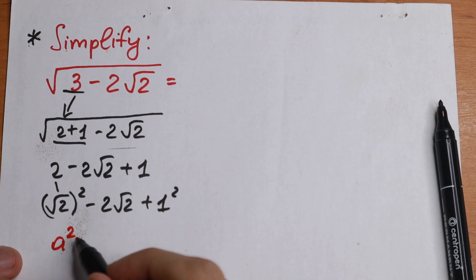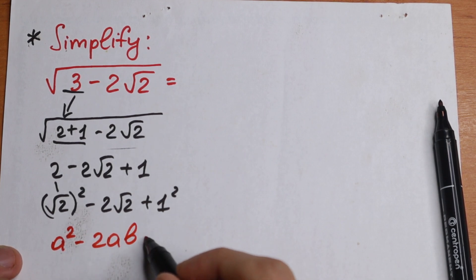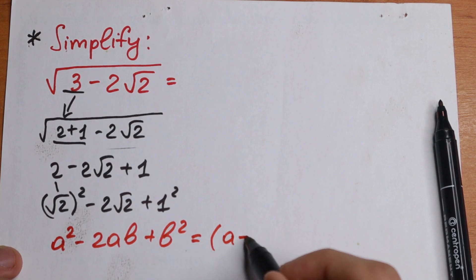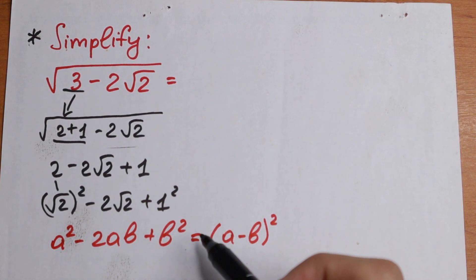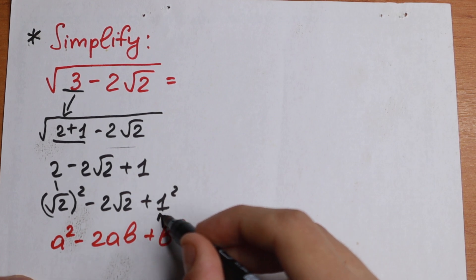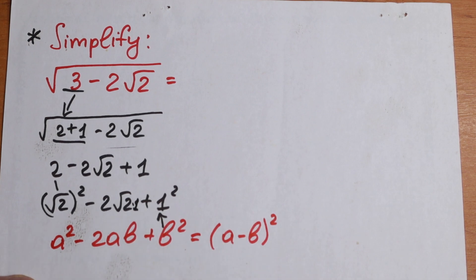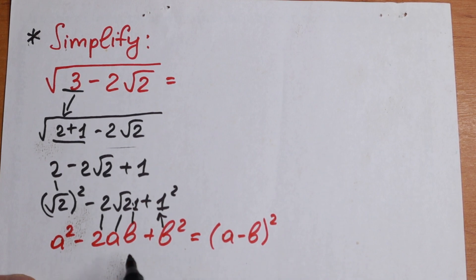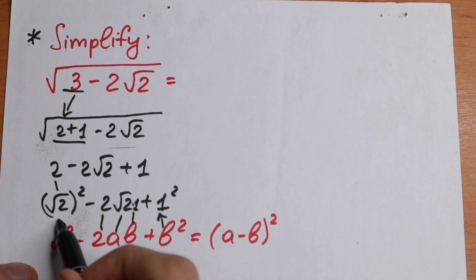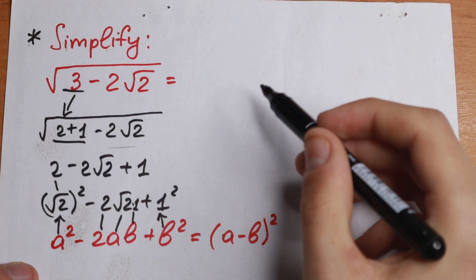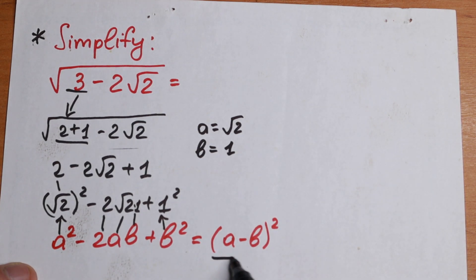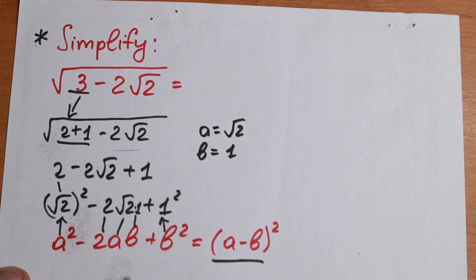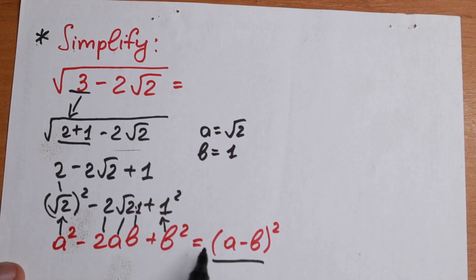Consider the algebraic formula: a squared minus 2ab plus b squared equals (a minus b) squared. Looking at our expression, we can match all the elements: a squared is (√2)², the middle term is 2·a·b where a = √2 and b = 1, and b squared is 1². So all elements match our formula perfectly, with a equal to square root of 2 and b equal to 1.